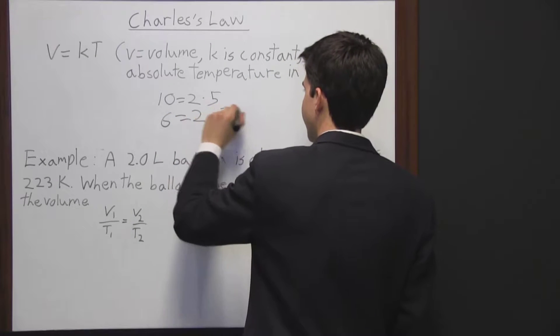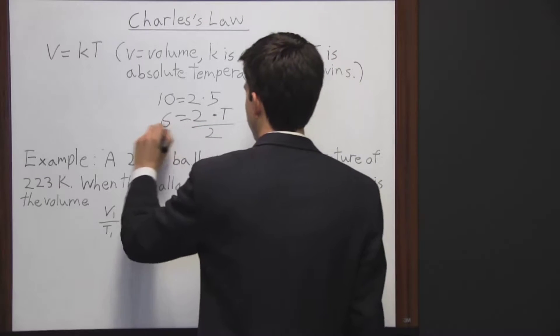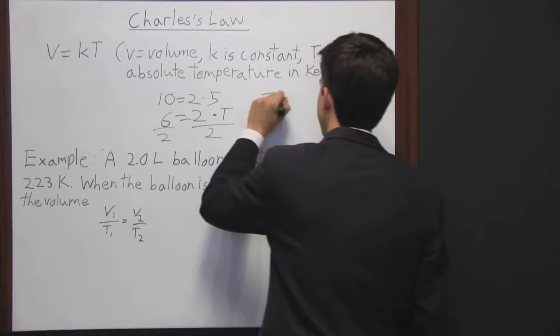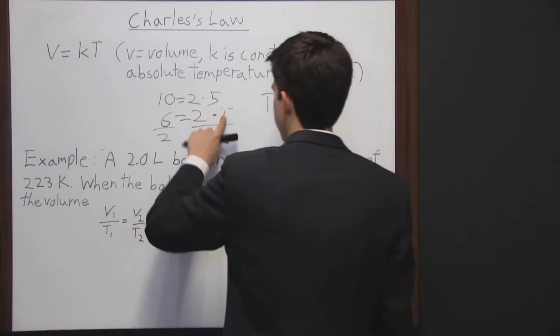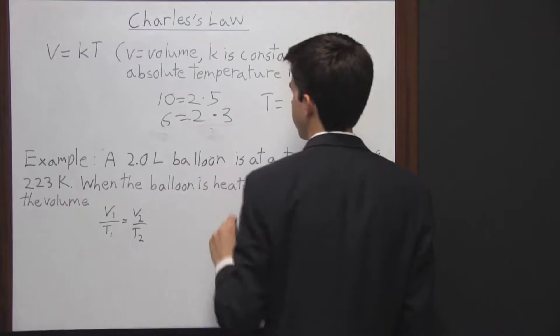Times T, trying to figure out what temperature is going to be. Using algebra we divide both sides by 2 and T equals 3. So volume went down and so did temperature.